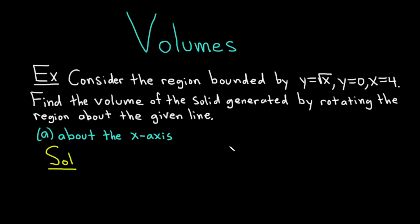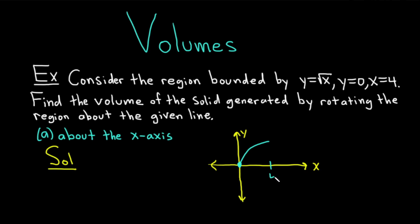The first step in these problems is to draw your region. Here's the y-axis and here is the x-axis. The square root of x looks something like this, but we're stopping at x equals 4. x equals 4 is a vertical line, and y equals 0 is on the x-axis, so this is the region here. If you plug in 4 into the square root of x, you get the square root of 4, which is 2. So the y-coordinate at the tip of the region is going to be 2.